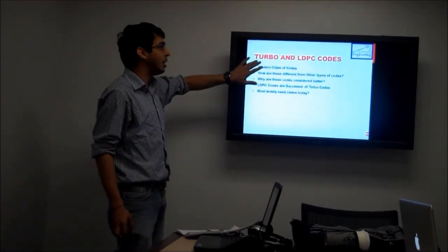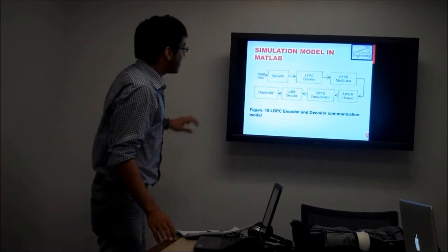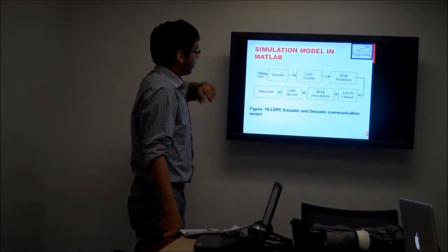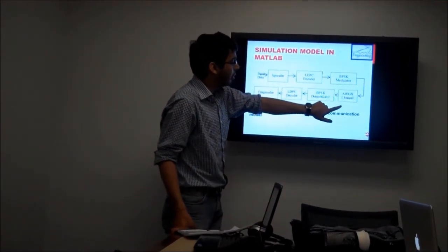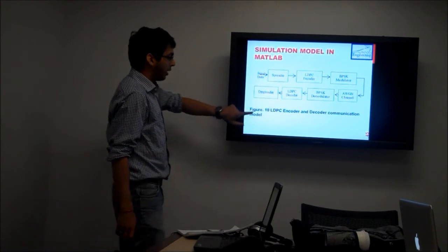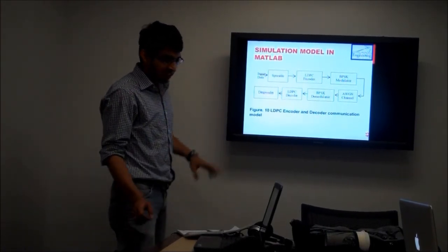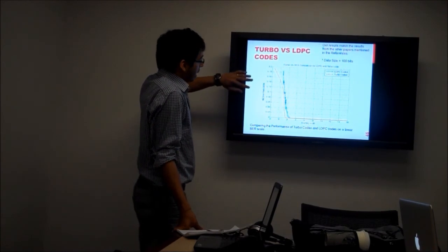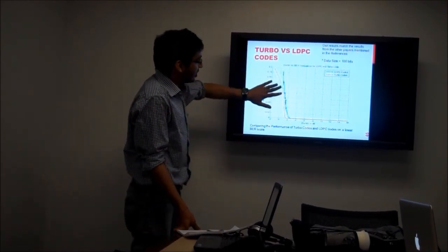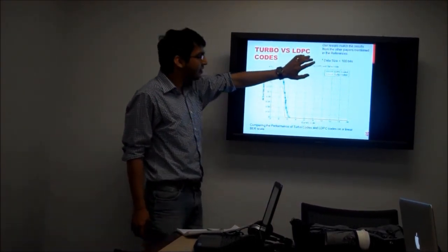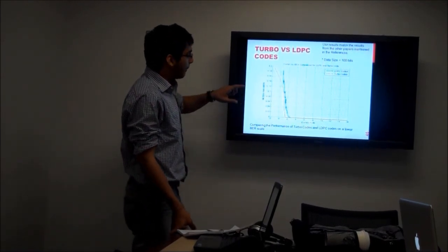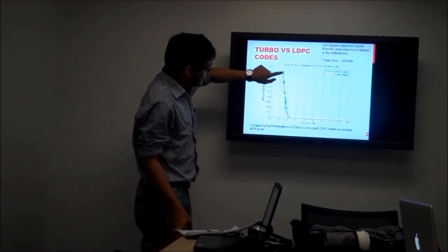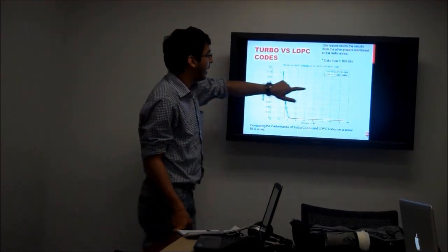Here is the simulation model designed in MATLAB. We have the input coming in, the spreader, the LDPC encoder, and we also designed an encoder for the turbo code, then the BPSK modulator, AWGN channel, demodulator, decoder, and despreader. Before going into the results, I should mention that the data size here is 100 bits, which is small for real-world models, but we used it to keep simulation times and computation manageable. The blue dotted line represents the LDPC coded data, and then this red line...